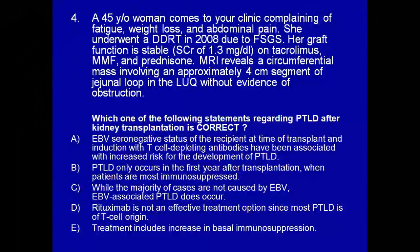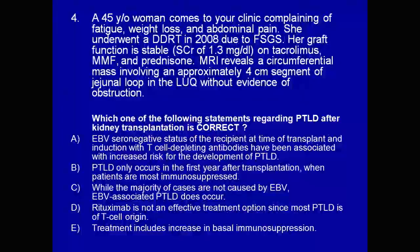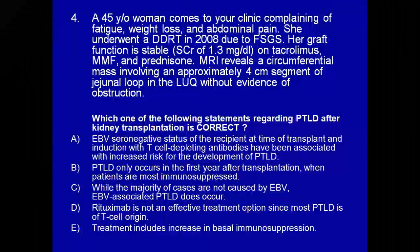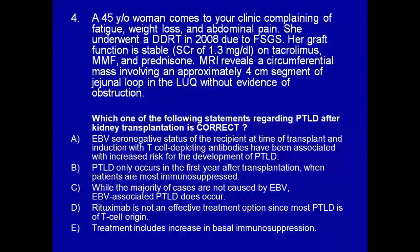A woman presents with fatigue, weight loss, and abdominal pain. She had a deceased donor transplant in 2008 for focal segmental glomerulosclerosis. Graft function is stable with creatinine 1.3 on tacrolimus, MMF, and prednisone. MRI revealed a circumferential mass circling the jejunal loop without evidence of obstruction. Which statement is correct regarding PTLD after kidney transplantation: EBV-seronegative status of the recipient and induction with T-cell depleting antibodies are associated with increased risk for PTLD development?